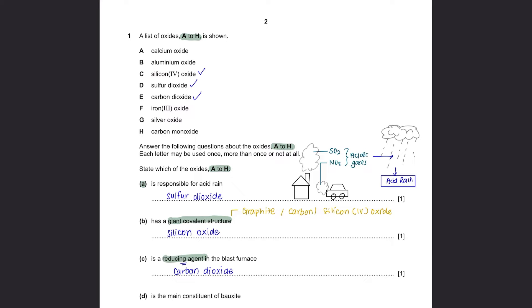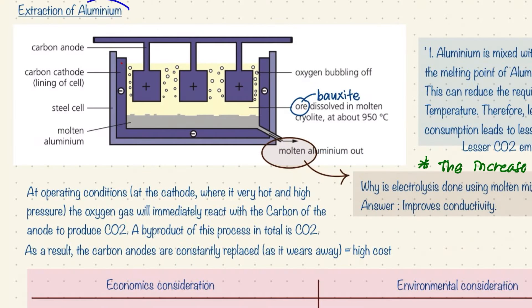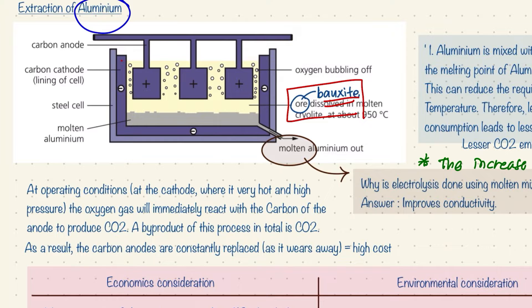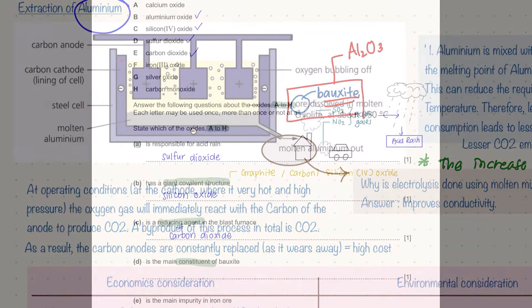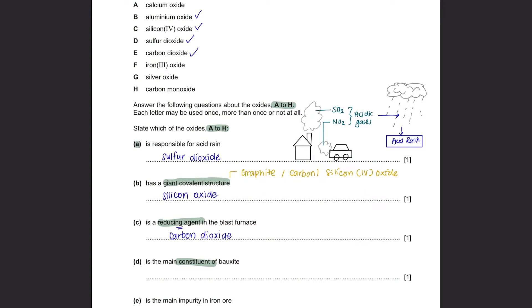Question D: Which oxide is the main constituent of bauxite? Aluminium is extracted from bauxite ore, and the main constituent of bauxite is aluminium oxide. So the answer for D is aluminium oxide.